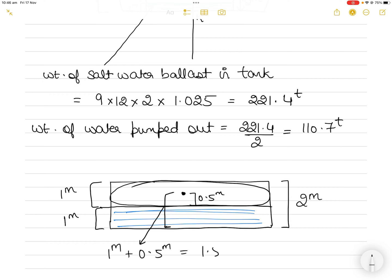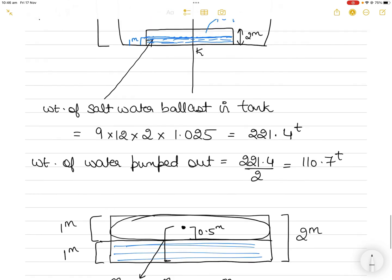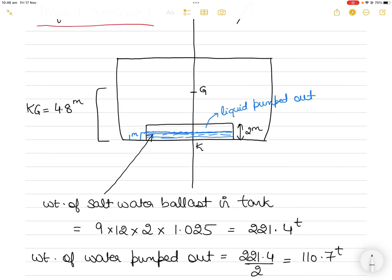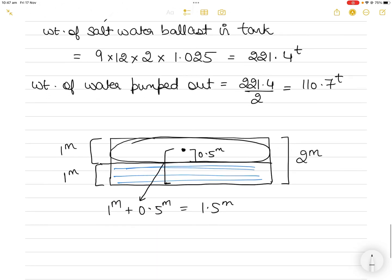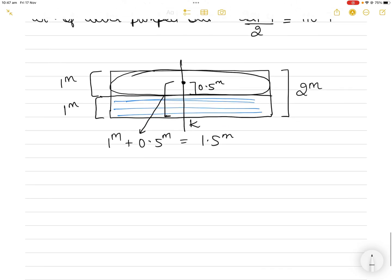We must give the height of the center of gravity relative to the keel, because KG = 4.8m is measured from the keel. From the keel, the VCG of the removed liquid is 1 + 0.5 = 1.5 meters. So the vertical center of gravity of the removed weight is 1.5 meters from the keel. When a weight is discharged, the ship's center of gravity moves away from that weight.